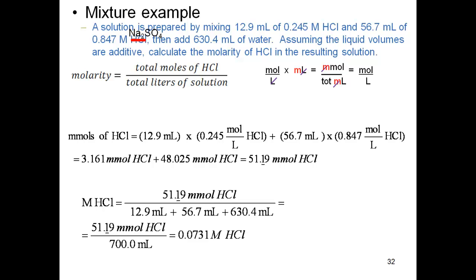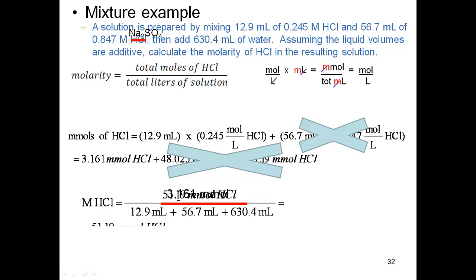So our millimoles of HCl, basically the second part of the equation wouldn't be there. We would only have the 3.161 millimoles of HCl coming from the 12.9 times the 0.245 molarity of HCl. So then we put that in, and we put that into our equation for the molarity and divide it by our total volume.